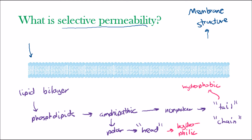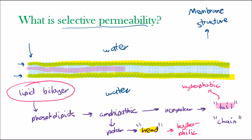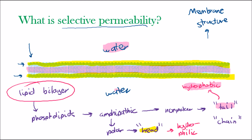The way the phospholipids arrange themselves within the lipid bilayer is that the hydrophilic heads go on the outside of the cell membrane, because in a cell membrane we have water on both sides. So the part of the phospholipid which interacts with water is the head, therefore the head is on the outside. And then the hydrophobic tails are on the inside — all the tails jumbled up together because they don't want to be in contact with the water.